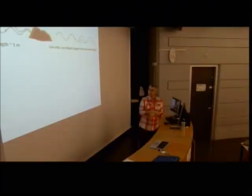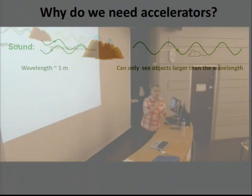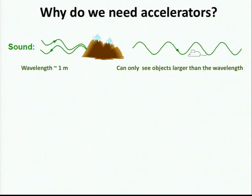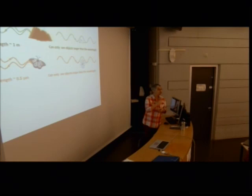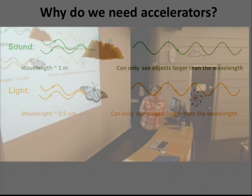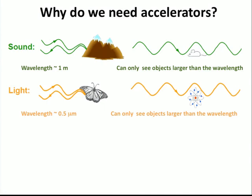Why do we need accelerators? We need accelerators to see small objects. You can only see objects smaller than the wavelength you're using. For example, with sound, as we do with sonar - you want to probe objects the size of a mountain. You can see if there's a mountain because it's much bigger than the wavelength associated with sound, about one meter. But you cannot see a small object like a small animal because it's smaller than the wavelength. To study small objects, I need to use light, which has a much shorter wavelength - about half a micron. A micron is one thousandth of a millimeter. We can see anything bigger than the wavelength, like a butterfly, but not atoms which are smaller.